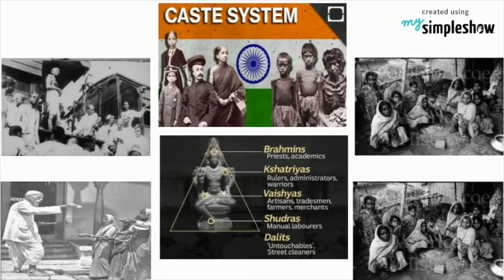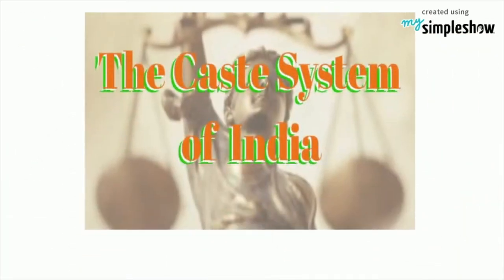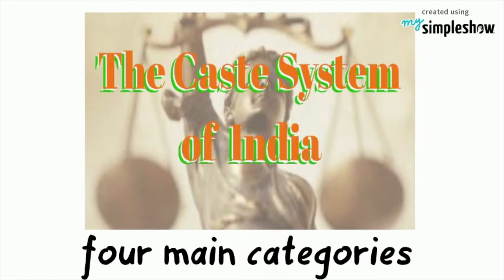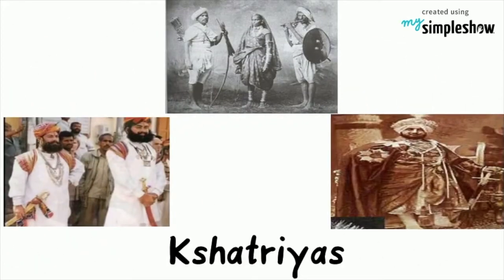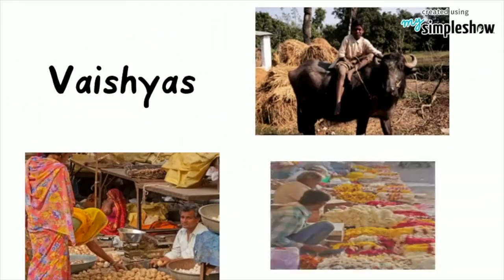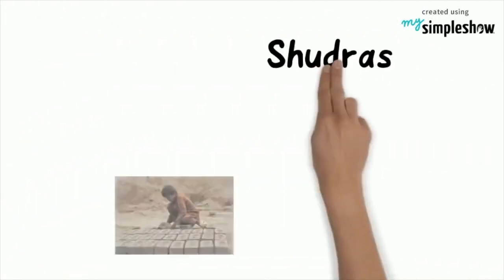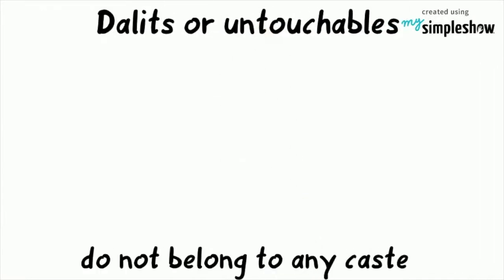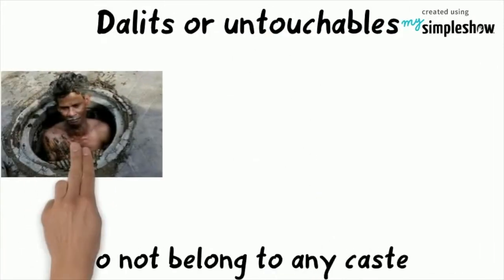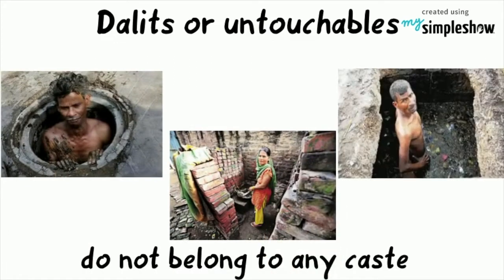Indian society is traditionally divided into castes rooted in Hinduism. The caste system divides Hindus into four main categories: the Brahmins, who are priests and scholars; the Kshatriyas, who are warriors and rulers; the Vaishyas, who are farmers, traders, and merchants; and the Shudras, who are laborers. There is also a group who do not belong to any caste, called the Dalits or untouchables, who work as street sweepers and latrine cleaners.